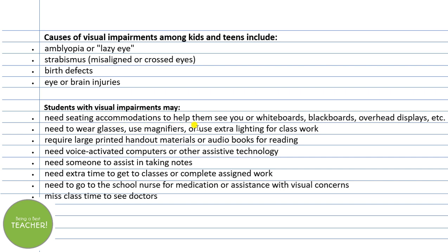Such students need to wear glasses, use magnifiers, or use extra lighting for classwork. As a future teacher, if a visually impaired child is in your class, one of your responsibilities is to ensure she wears her glasses while working. If she gets tired of wearing glasses the whole day, give her a break every 10–15 minutes. Make sure she is comfortable and isn't straining to read the blackboard without glasses. Students may also require large print handout materials and audiobooks for reading.